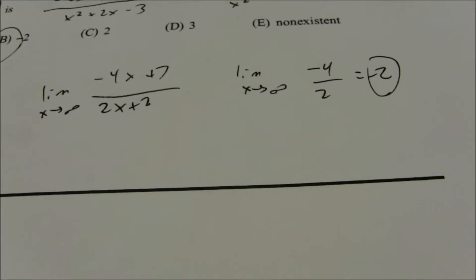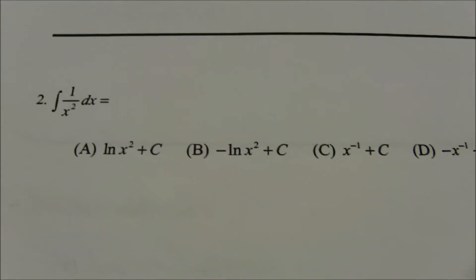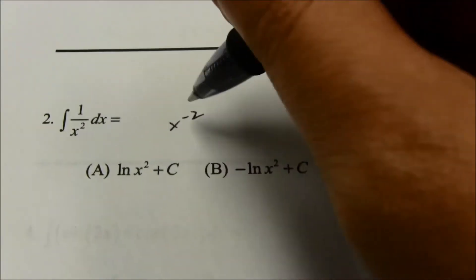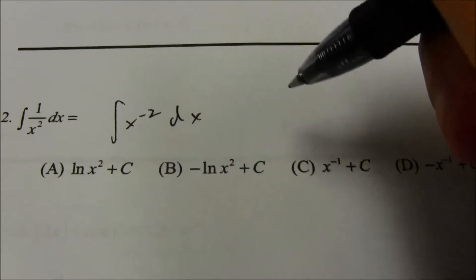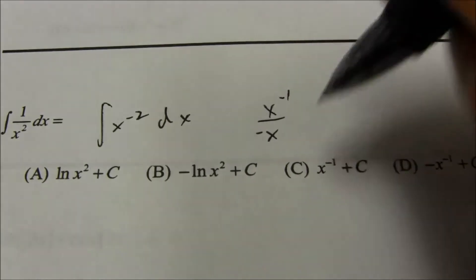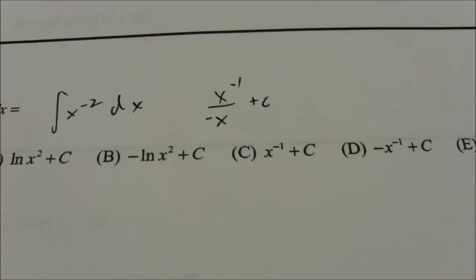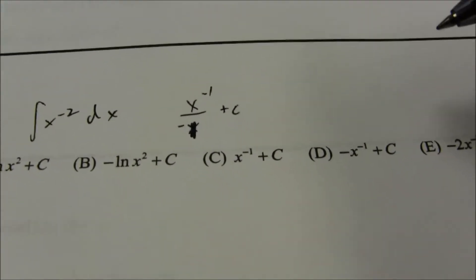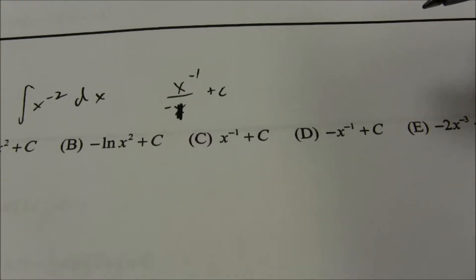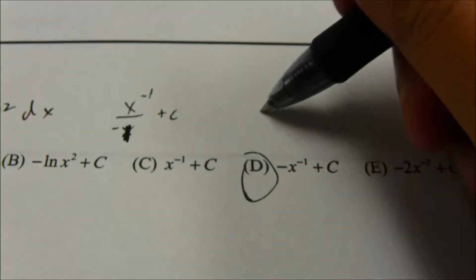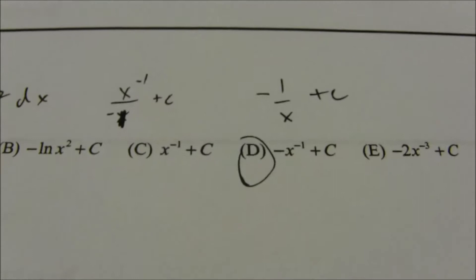Number 2: that is not a natural log — that's x to the negative 2 power. Always rewrite using negative exponents before you use the power rule. Power rule: raise the power by 1, divide by the new power. You should have a plus C. That should be divided by negative 1. Normally I would rewrite that as negative 1 over x to the first plus C, but they did not have that option in the answer, so the answer is D.